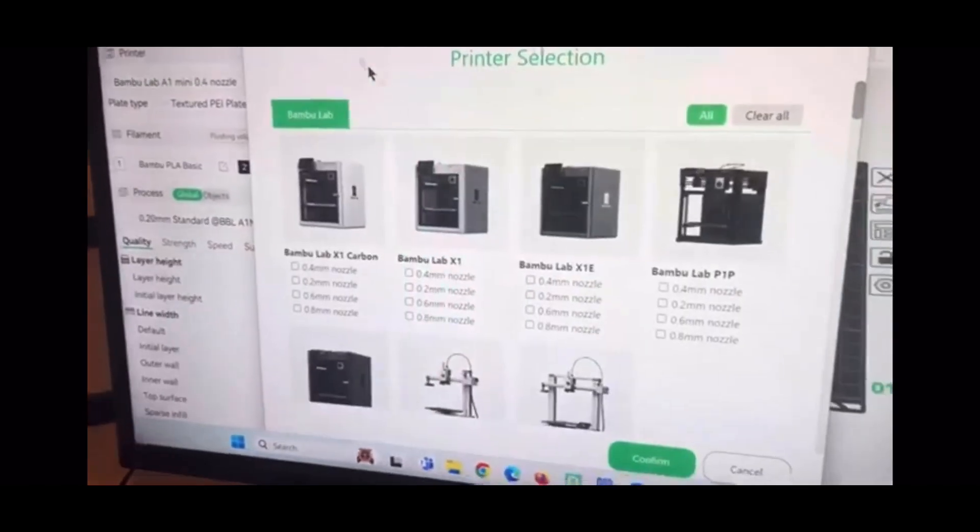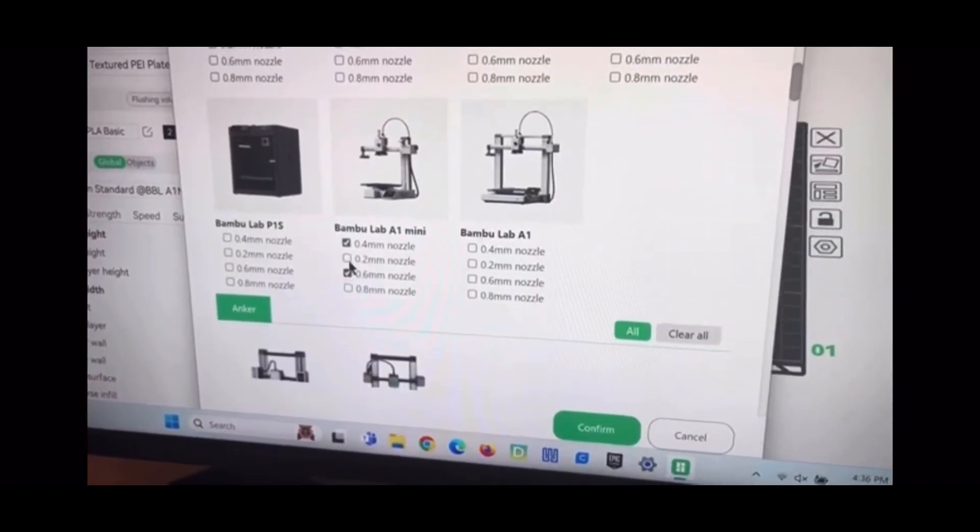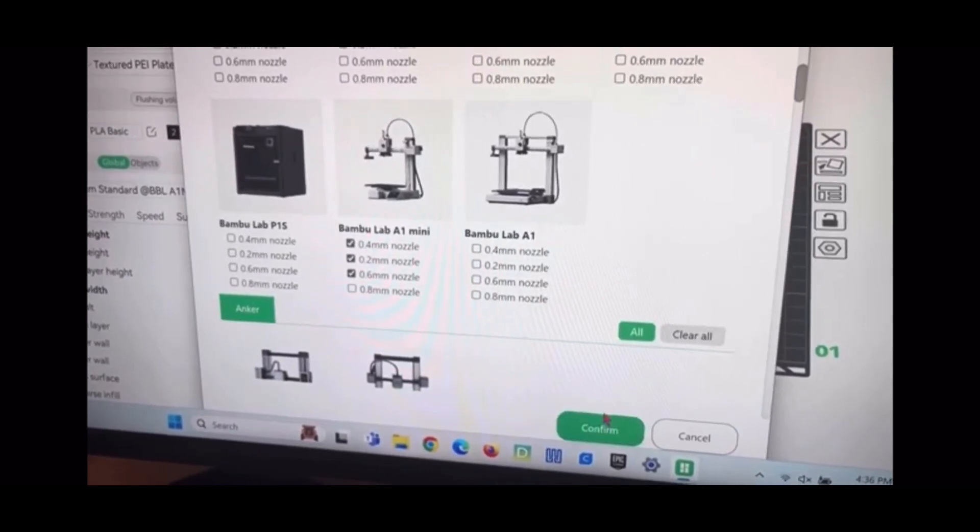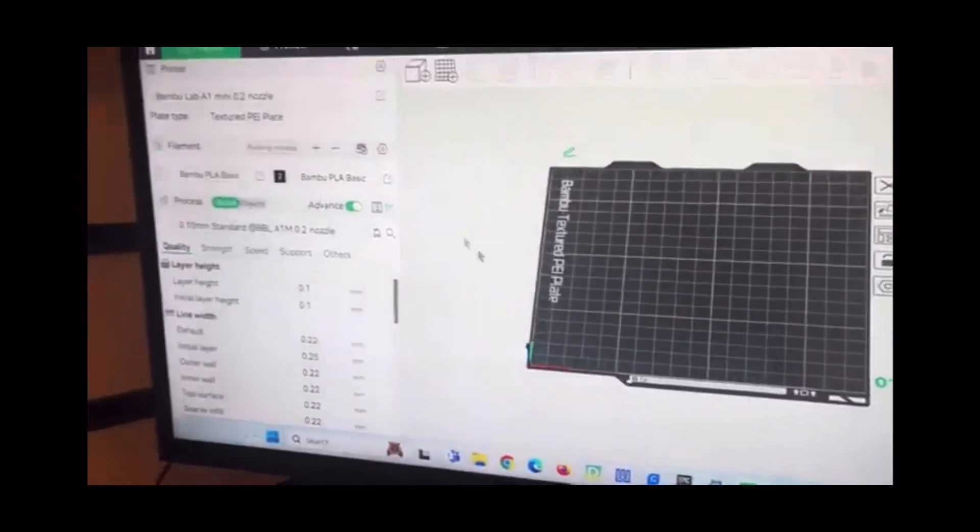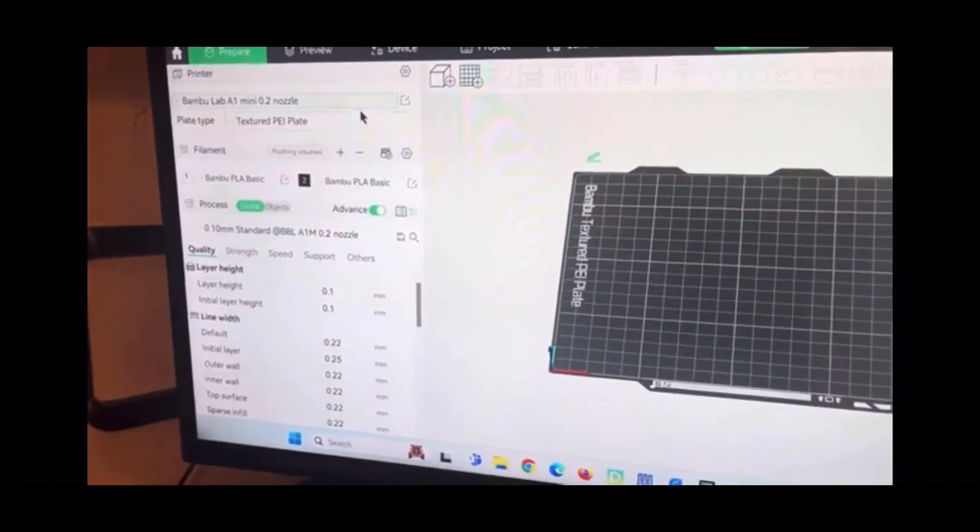This is the printer that we have. You're going to check that all these are all the nozzles that I have, and then press confirm. Then you click the drop down, make sure it's the one that you have, and now you're done.